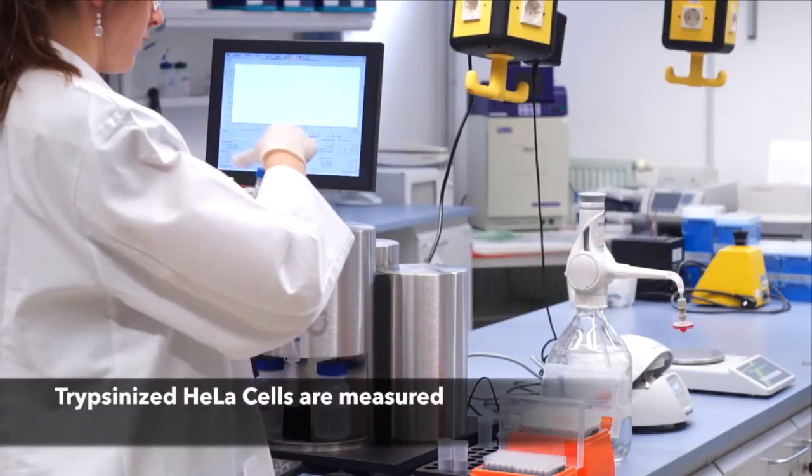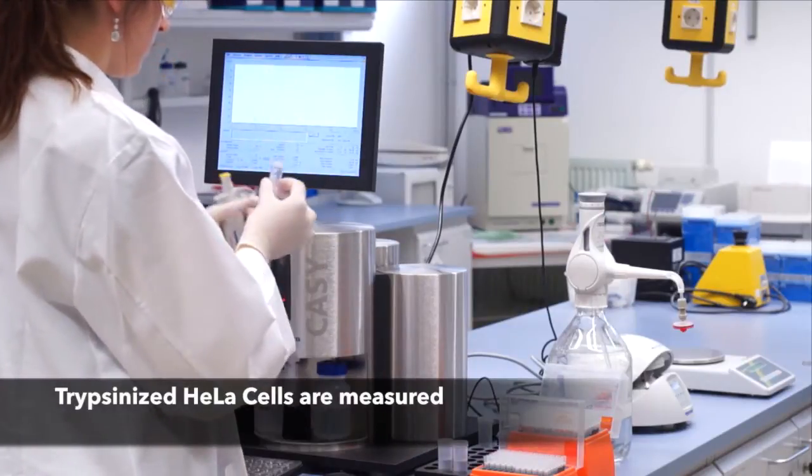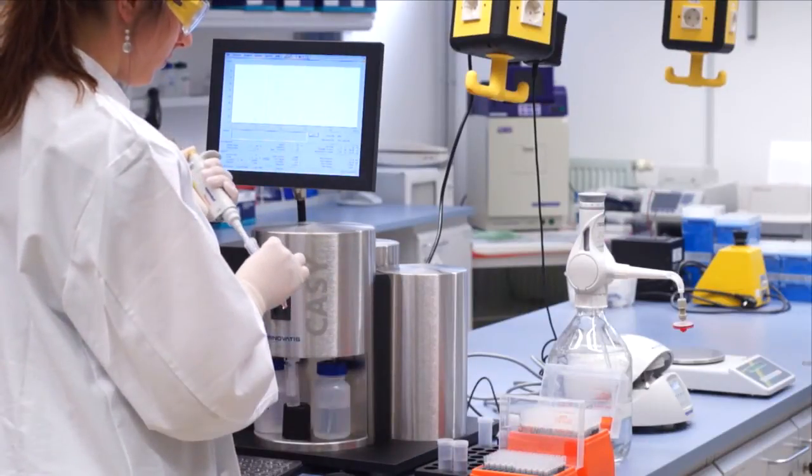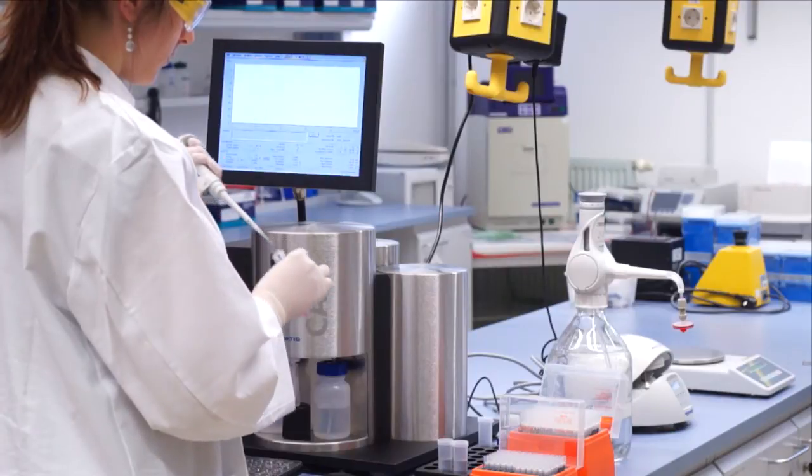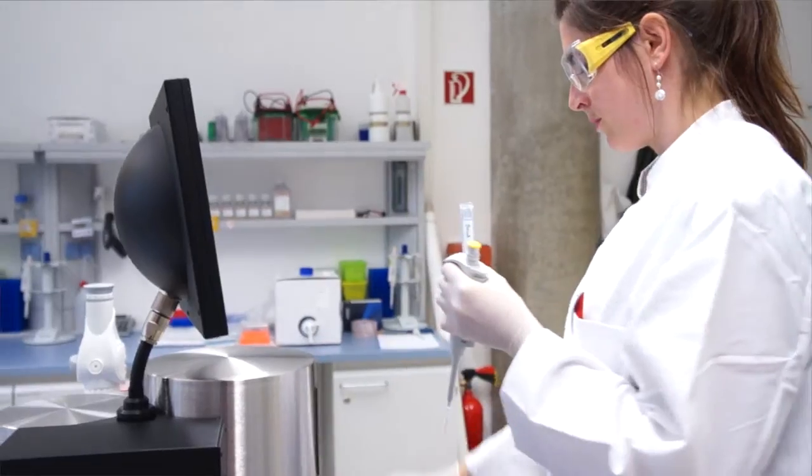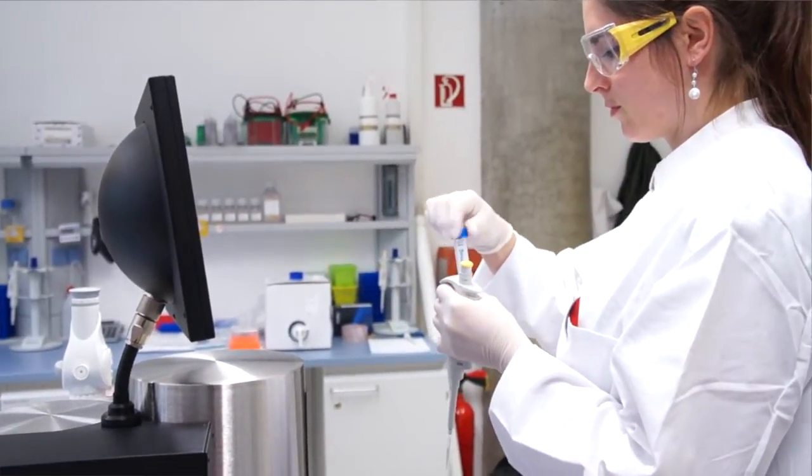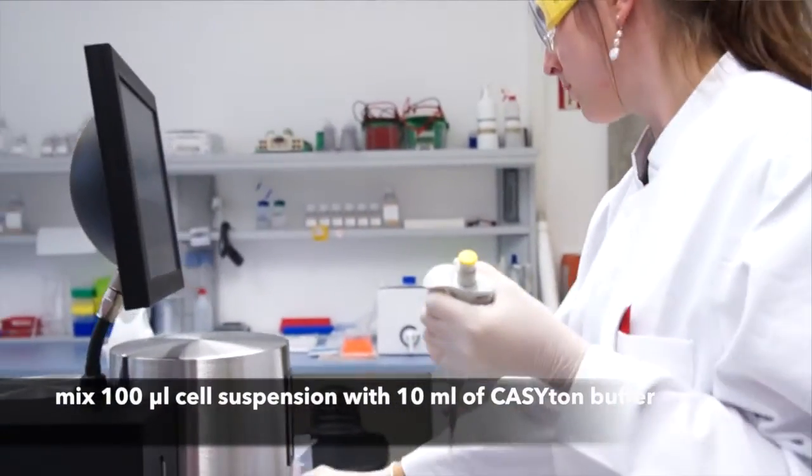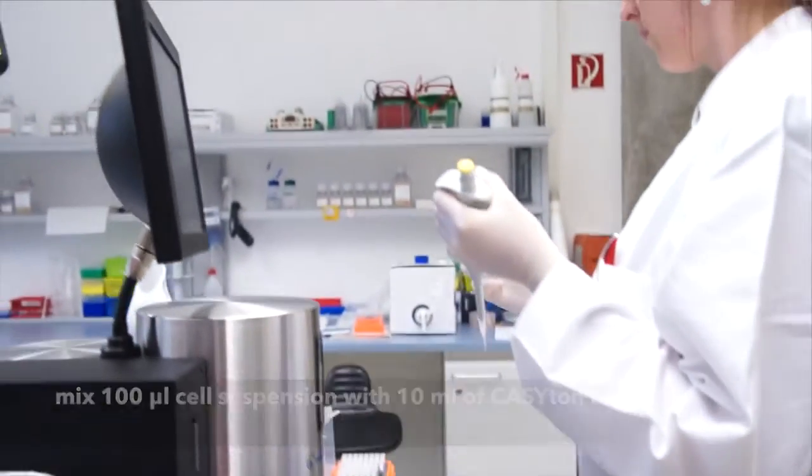We will now perform a measurement of HeLa cells. The instrument has already been set to measure these cells. We pipette 100 microliters of the sample and mix these 100 microliters with 10 milliliters of measurement buffer KC Tom.